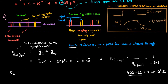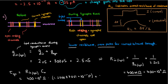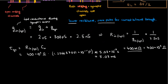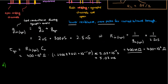The time constant during the synaptic event is just the new input resistance times the capacitance of the cell. Using the capacitance from earlier, the time constant is 5.03 times 10 to the negative 3 seconds, or 5.03 milliseconds. So we're done with parts A, B, and C, which just leaves us with part D.